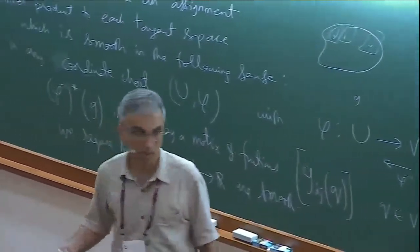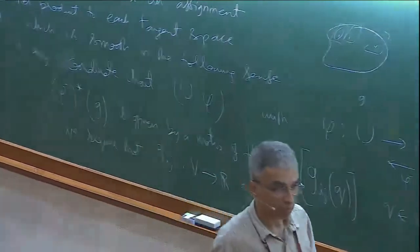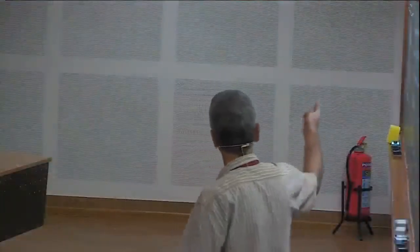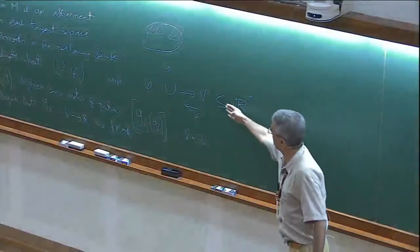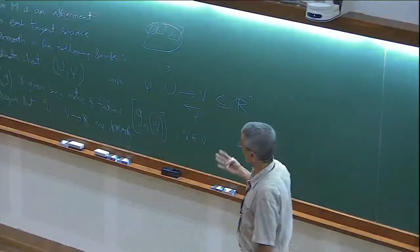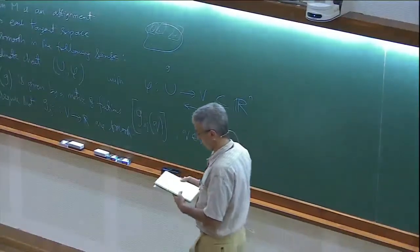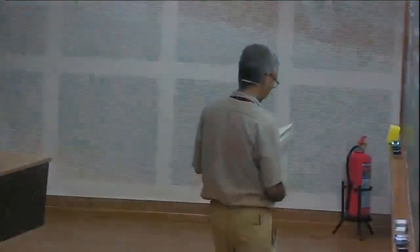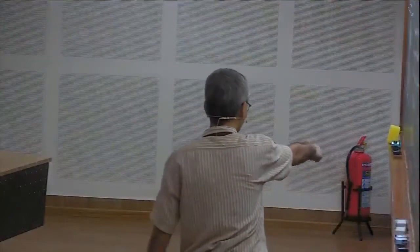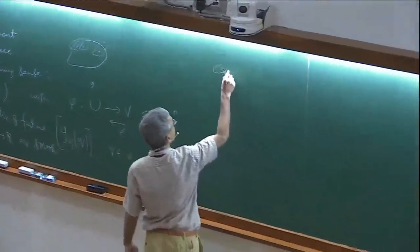Of course, when we want to talk about compact objects, then this setting is not good enough and one does need a manifold. This is one way of defining smoothness.